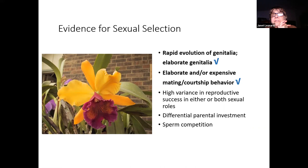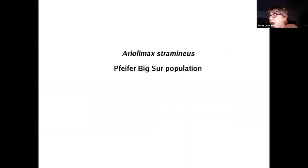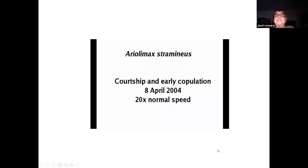Also, you can get differential parental investment. Nowadays, we look at sexual selection as going on even after mating — there may be sperm from different individuals competing for access to the eggs. It may also be the case that the female reproductive tract is preferentially selecting the sperm of some individuals over others, which may explain some of these elaborate genitalia. So we want to look at a little bit of sex movie here. This shows 20 times normal speed, courtship and copulation of Areolimax stromineus from the Big Sur population.